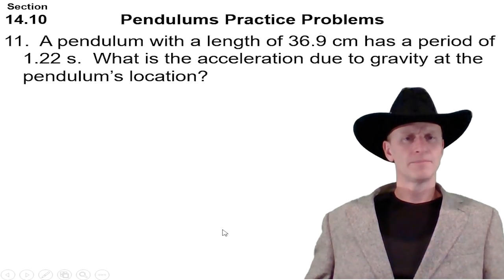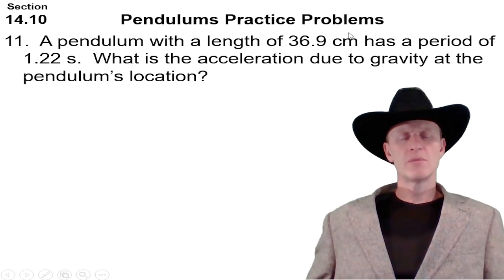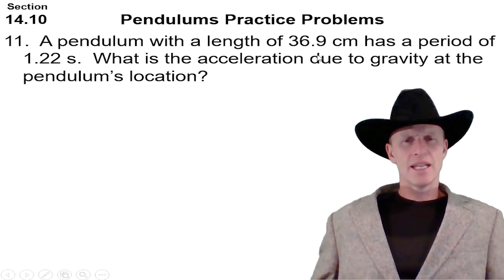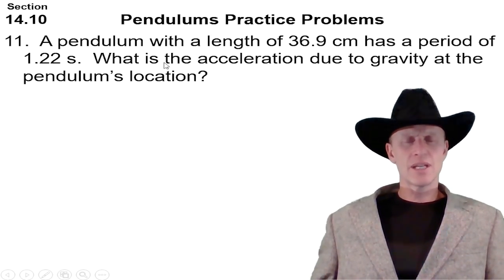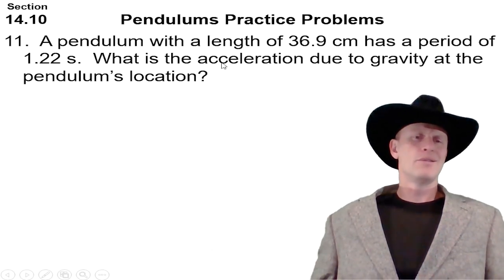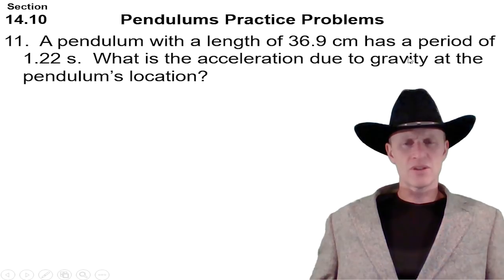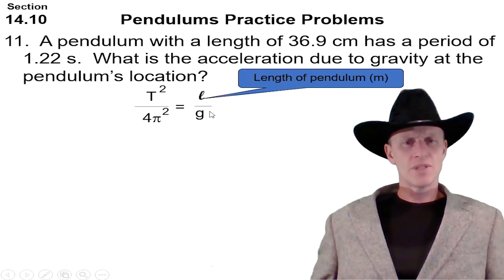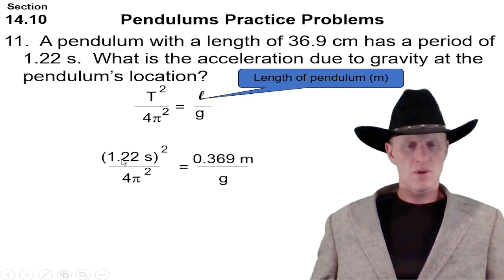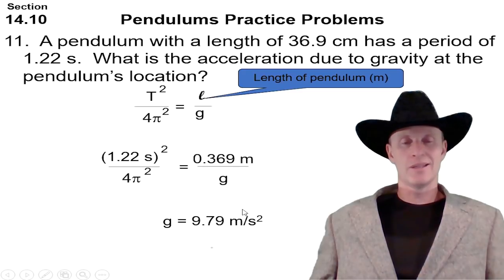All right, let's look at one more. A pendulum with a length 36.9 centimeters has a period of 1.22 seconds. So we're given the length, we're given the period, and the question says what is the acceleration due to gravity? Maybe you got knocked out, you don't know where you're going, and you have to figure out what planet you're on or something like that. So you're going to have to solve for gravity. So g is right here, the length is given to be 0.369, T is 1.22. So you take that 0.369 times 4 times pi squared divided by 1.22 squared, and we get our answer. Hey, it just so happens it looks like we're on earth: 9.79 meters per second squared.